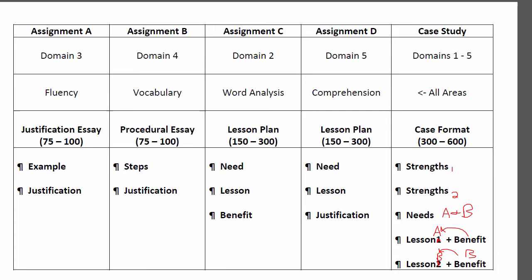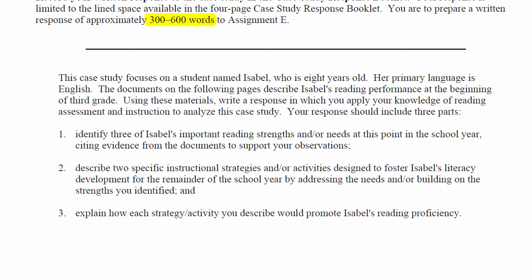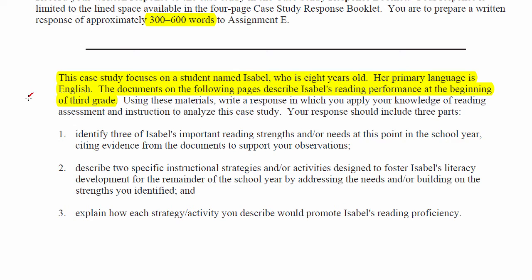When we go to the actual question, here is what we see as far as what you need to do. They give you some background information: it's an eight-year-old girl named Isabel whose primary language is English, focusing on her performance at the beginning of third grade. Third grade is really a make-or-break time for the people who made this test — they want children fluent by third grade. Watch the reading instruction videos I put together if you need more information.